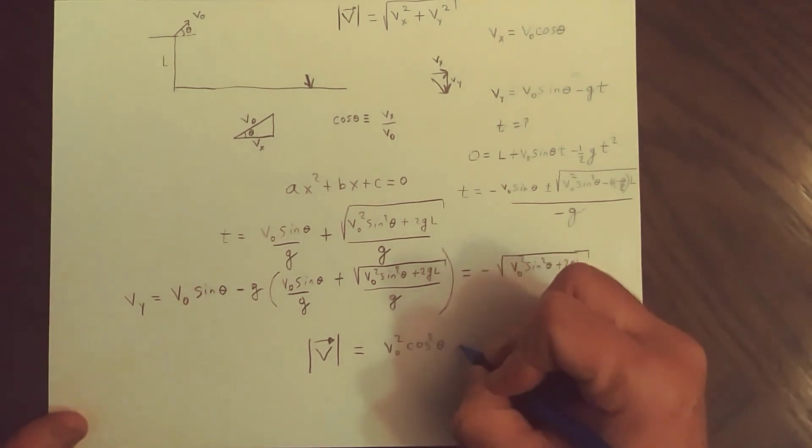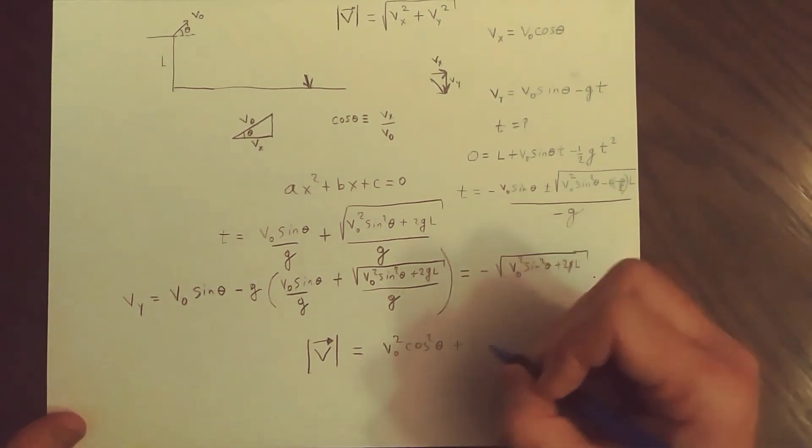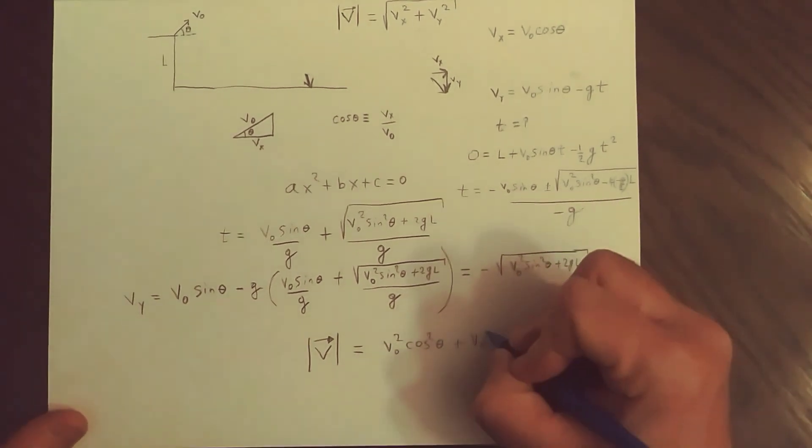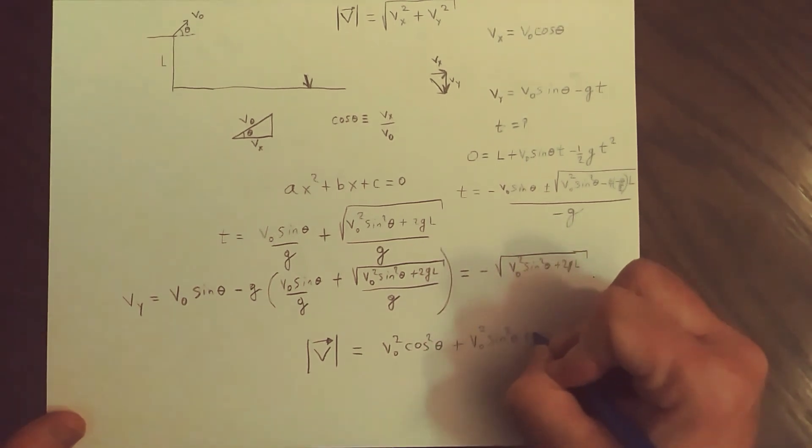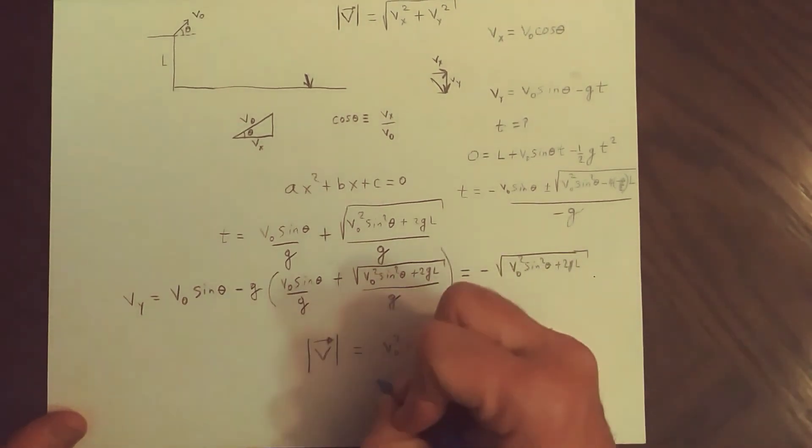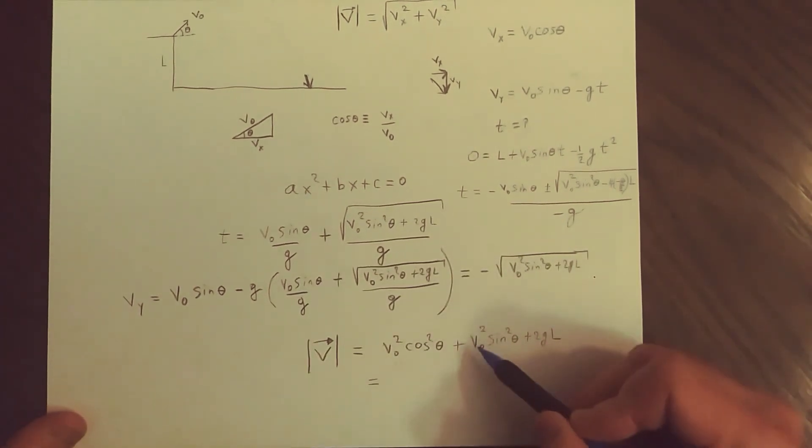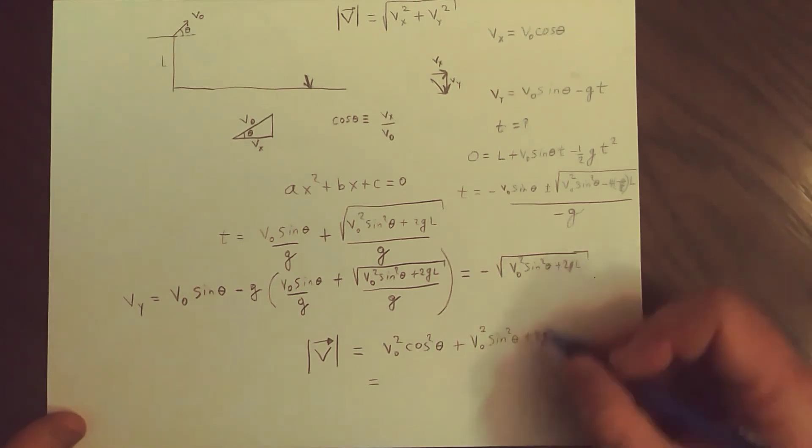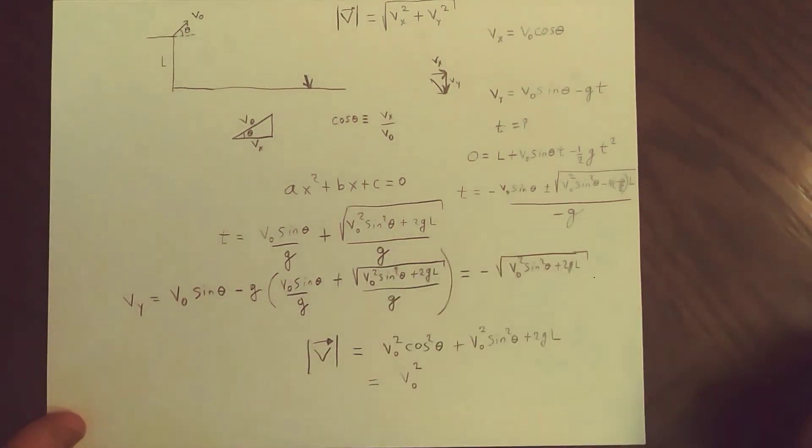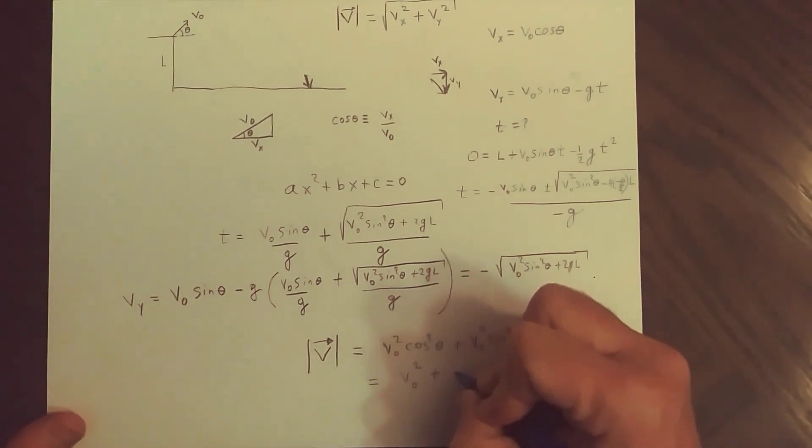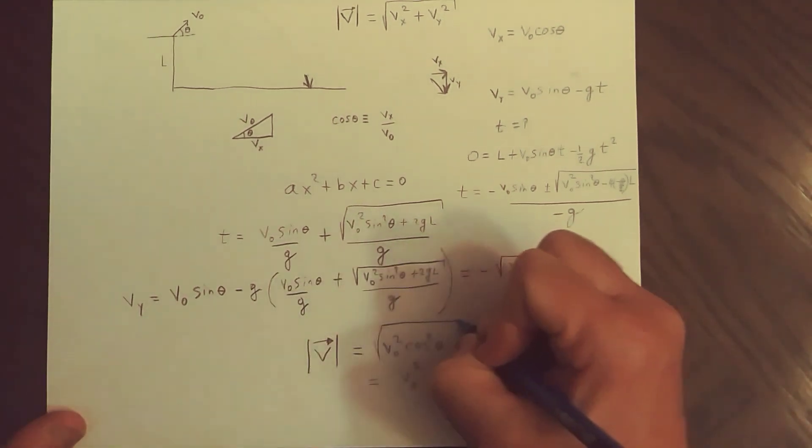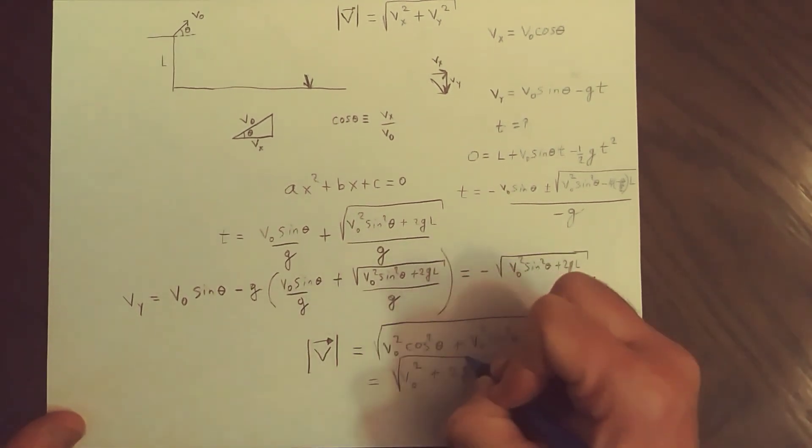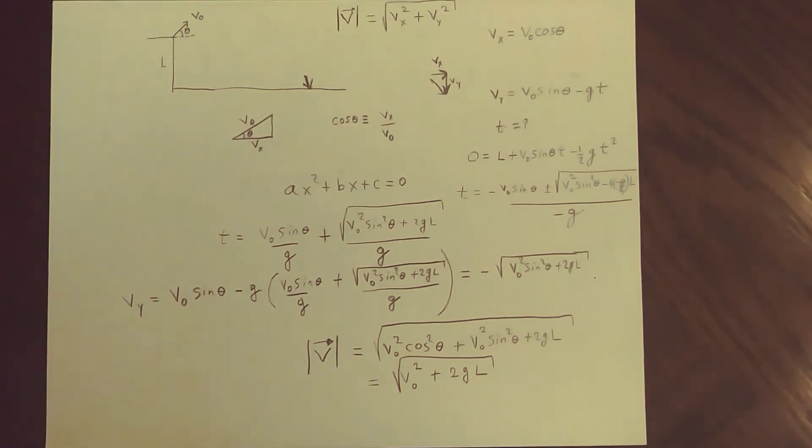So we get plus V0 squared sine squared theta plus 2GL. Here we can pull out the V0 squared and then we get cosine squared theta plus sine squared theta, but that's equal to 1. So we get V0 squared plus 2GL. And of course, we have to take the square root of all of this. So that's the square root of that. And that's our speed. So we're checking out. Thank you.